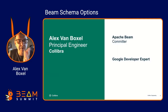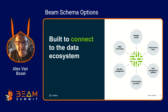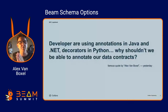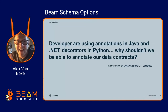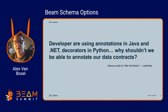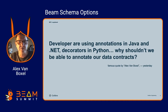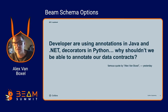I'm Alex. Let's start with this quote — author: me. Everybody's talking about annotating Java, Python, .NET or something else, but why can't we do this in the Beam schema contracts?